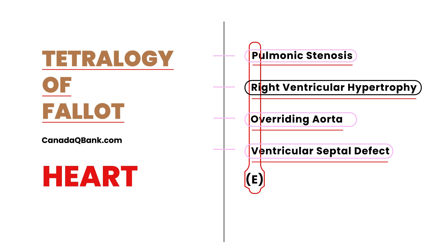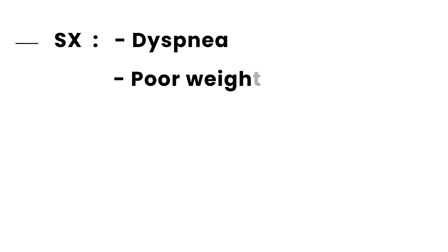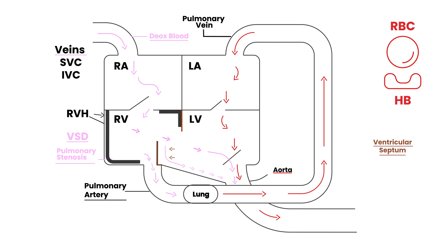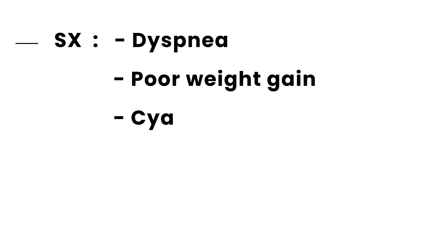When a child has Tetralogy of Fallot, you're talking about babies. These basic symptoms are dyspnea — difficulty breathing — and the child will probably have poor weight gain. Looking at the pathophysiology, the aorta is pumping out blood that is a mixture of deoxygenated and oxygenated blood. So the blood that the aorta pumps out to the body has less oxygen, and as a result, the babies are cyanotic.